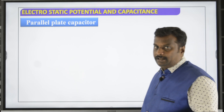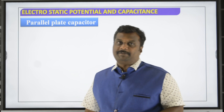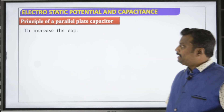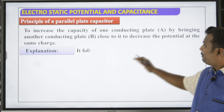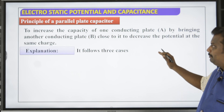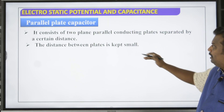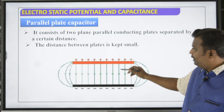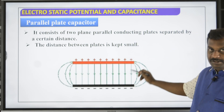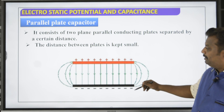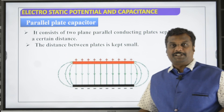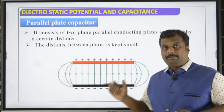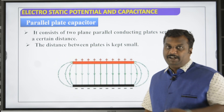Now, what is the capacitance of a parallel plate capacitor? A parallel plate capacitor consists of two plates A and B — one positively charged and one negatively charged. The distance between them is very small.